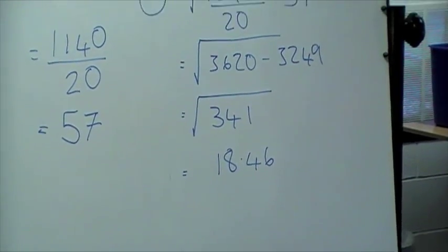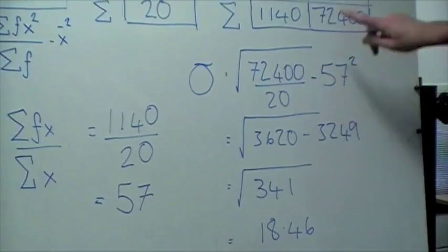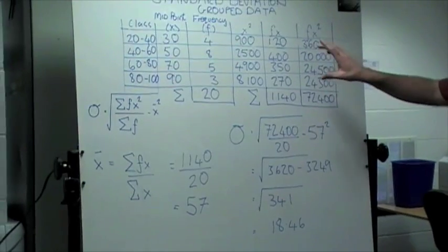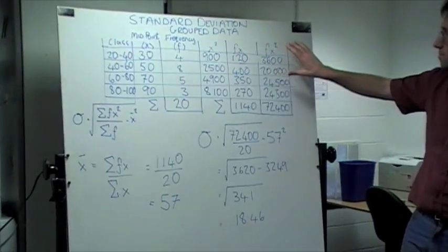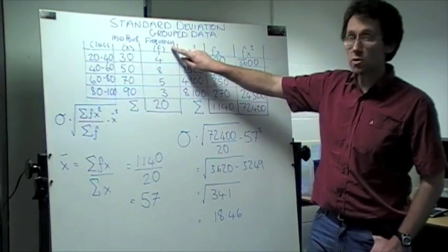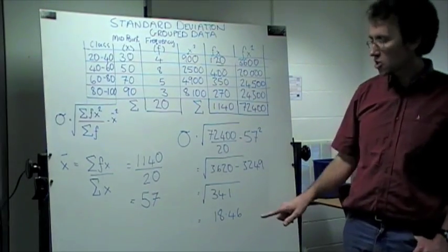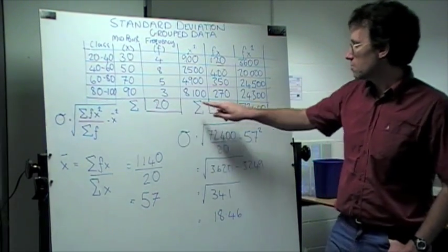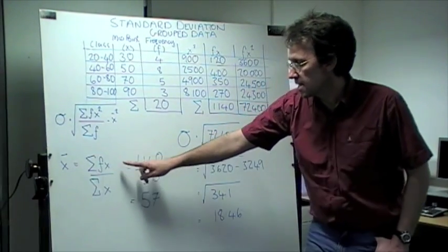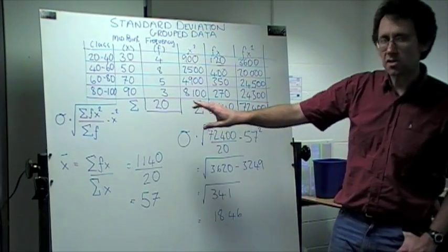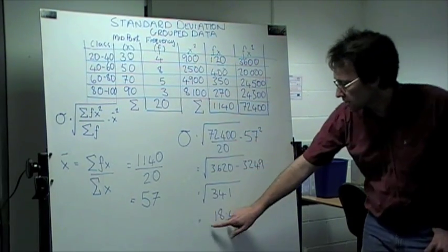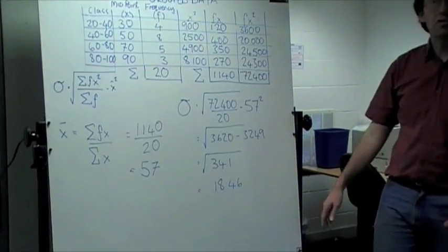So there we have it. We've calculated the standard deviation for a set of grouped data. In summary, what we have to do is populate a table with these headings, where the class and the frequency will be given. The first stage is to calculate the sums, using those figures to calculate the mean. And then we can substitute everything into the standard deviation formula and calculate the standard deviation and draw our conclusions from that. Thank you very much.